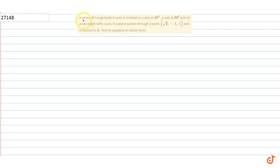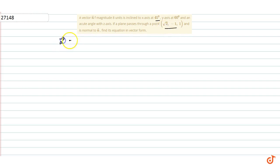A vector n of magnitude 8 units is inclined to the x-axis at 45°, to the y-axis at 60°, and at an acute angle with the z-axis. A plane passes through the point (√2, −1, 1) and is normal to n. Find the equation of the plane in vector form. The position vector a⃗ of the given point is √2 î − ĵ + k̂.